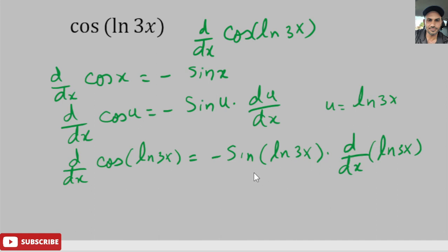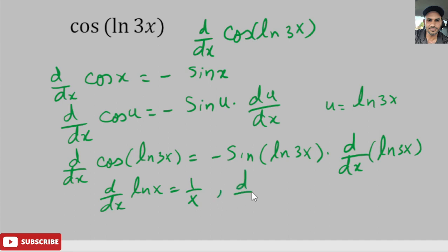Now we need to take the derivative of the natural log. The derivative of ln of x is d/dx of ln of x equals 1 over x. Similarly, by the chain rule, d/dx of ln of u equals 1 over u times du/dx, where u is a function of x.